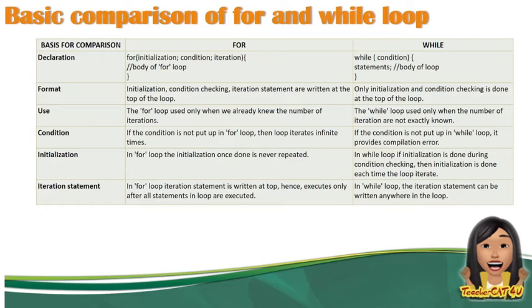In terms of condition din, magkaiba din sila. Kasi ang condition ng for, if not put in for loop, nagre-create siya ng infinite times of iteration. Samantalang sa while loop, pag not, hindi nakalagay o condition is not put up, nagre-create siya ng compilation error. Another difference between the two is the initialization of value. Sa for loop kasi, ang initialization are once done is never repeated. Samantalang sa while loop, initialization is done during condition checking, and the initialization is done each time the loop iterate.